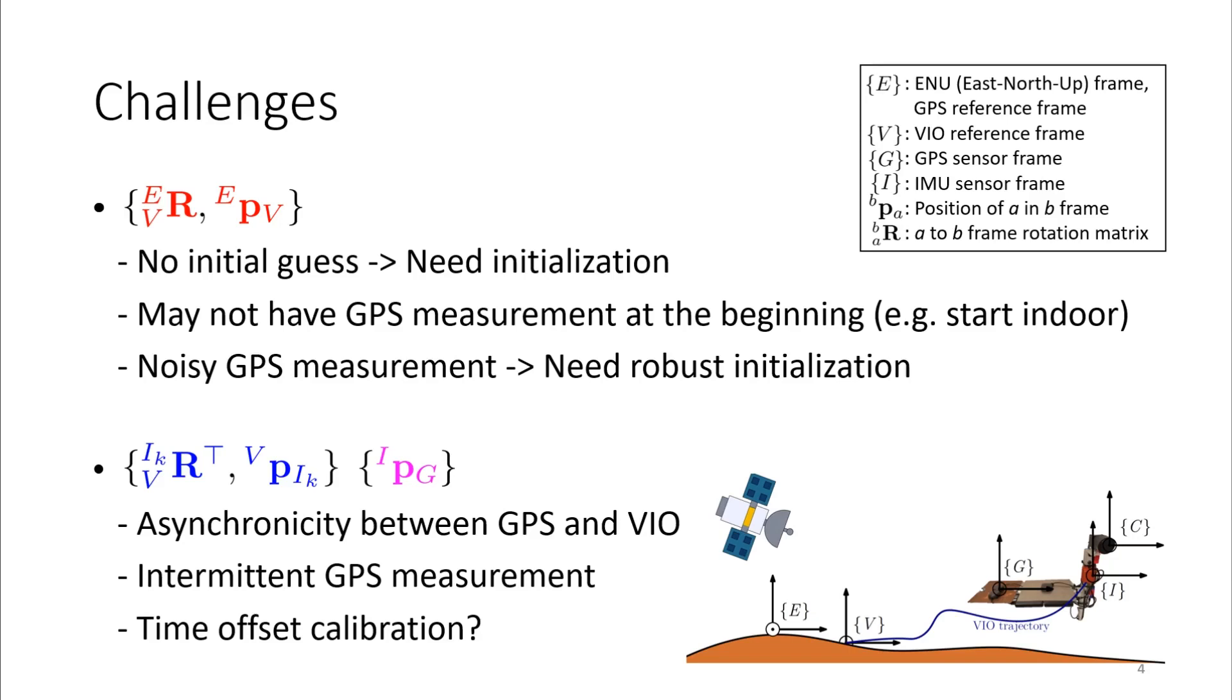For the IMU poses, GPS measurements can be intermittent and asynchronous to the system that may not have exact IMU pose at the time we want. Finding a way to handle this is the key to fuse GPS with other sensors.